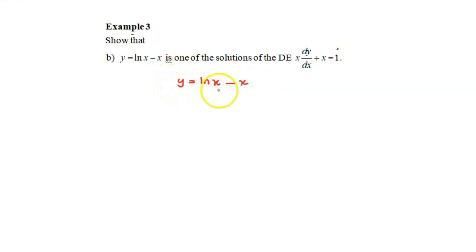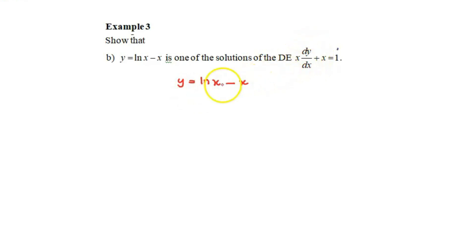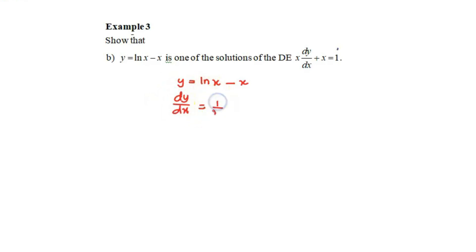To prove that this equation is a solution for the given differential equation, we begin by finding the differentiation. So dy over dx equals 1 over x as the derivative of ln x, and minus 1 as the derivative of x. This gives us dy over dx equals 1 over x minus 1.